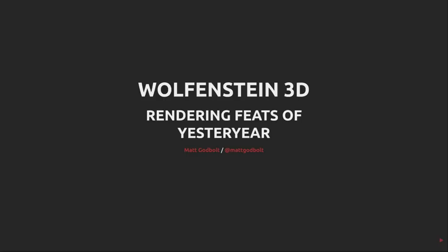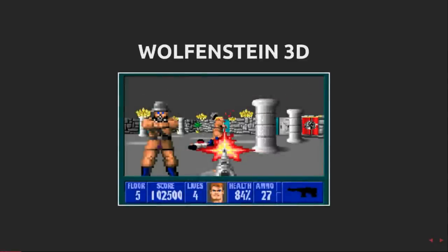Wolfenstein 3D was one of those games in the 90s that made you go, how on earth did they do that? Somehow id Software was able to get impressive 3D graphics out of a machine with no apparent 3D capabilities. I'm Matt Godbolt and in this video I'm going to try and explain how this was achieved. This is what Wolfenstein looked like.